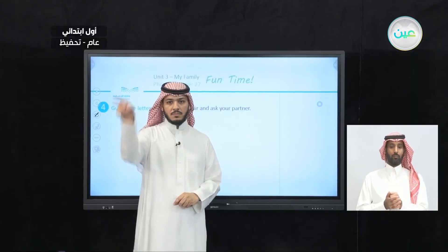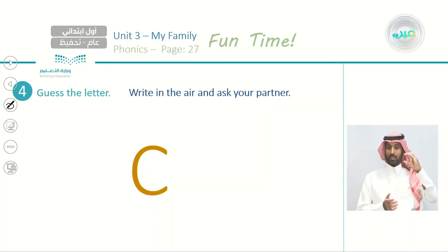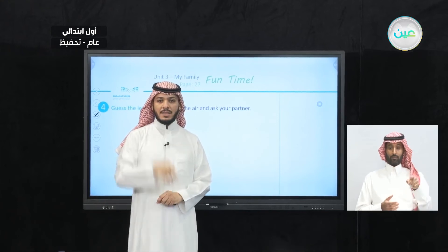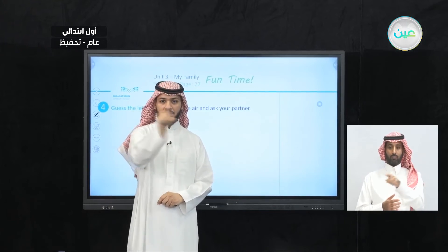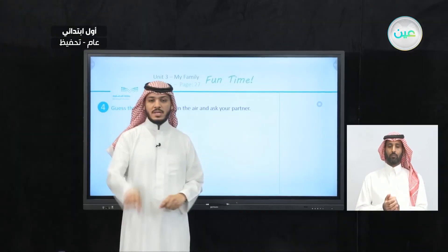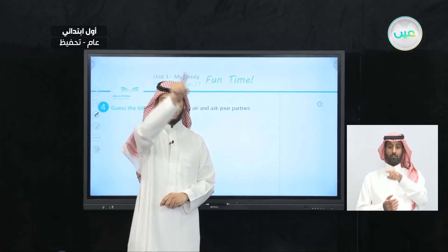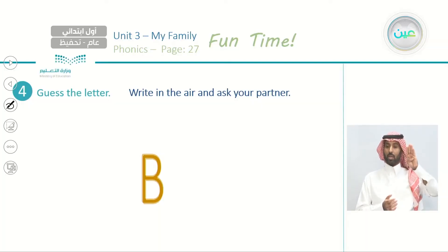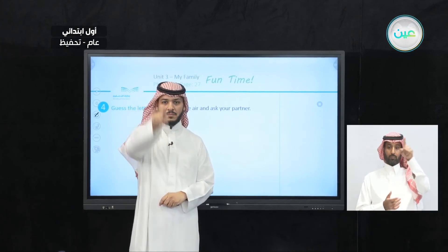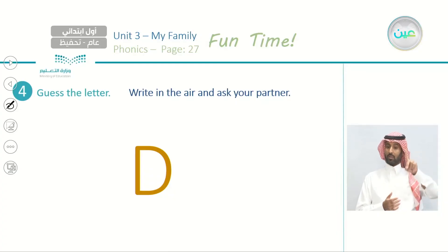What is this? This is C. Excellent. Let me give you another one — what is this? This is E. Excellent. Let me give you another one — what is this? This is B. Excellent. And another one — what is this? This is D. Excellent. So we have the letter D.